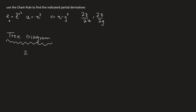So the first step here is you see the first function, z. So z is equal to e to the u v squared. This function is a two-variable function — you see u and v. So you write z at the top, and then you write u and v because this function is a two-variable function.